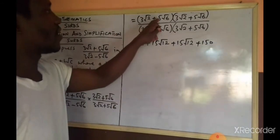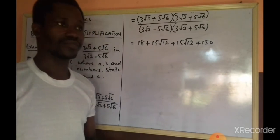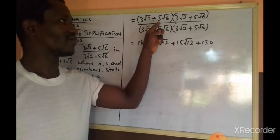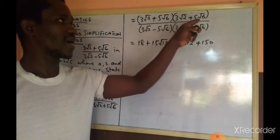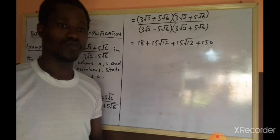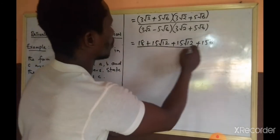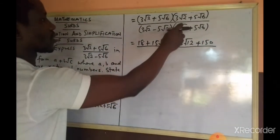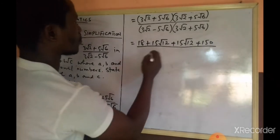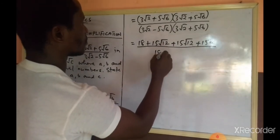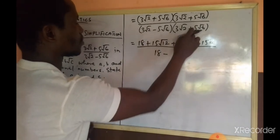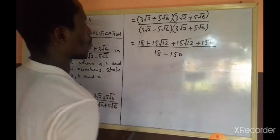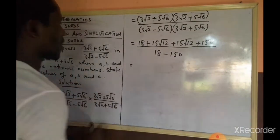And 5√6 times 5√6 will give us 150, because 5 times 5 is 25, √6 times √6 gives us 6, and if you say 25 multiplied by 6, it will give us 150. And that's all over 3√2 times 3√2, that is still 18.